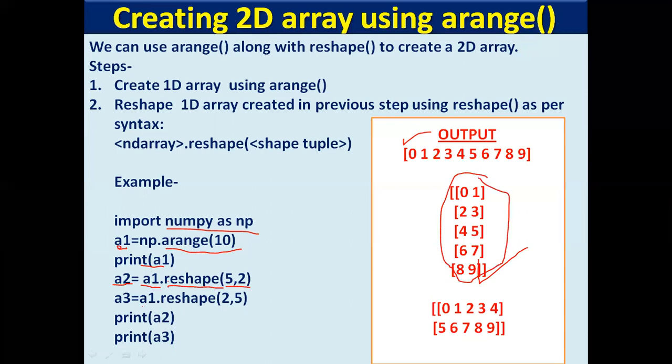In another example, the same A1 array is reshaped with 2 rows and 5 columns, giving array A3 — a 2D array with 2 rows and 5 columns. We can also combine arange and reshape in a single statement. Using np.arange(8).reshape(2, 4) produces a 2D array with 2 rows and 4 columns, values 0 to 7.